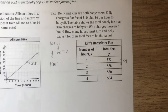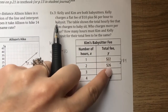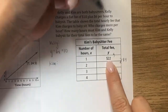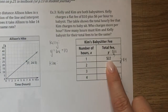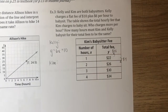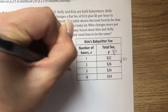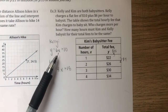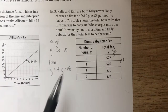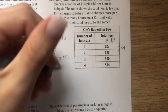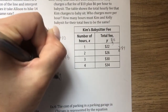To find Kim's initial fee we need to think about zero hours worked and work backwards up the table. Instead of adding four to go down, subtract four to go up. Subtracting four from 22 gives 18 dollars — that's her flat rate or y-intercept. So Kim's equation is y equals 4x plus 18. Kelly charges more per hour at six dollars, but Kim's initial flat rate is higher at eighteen dollars.